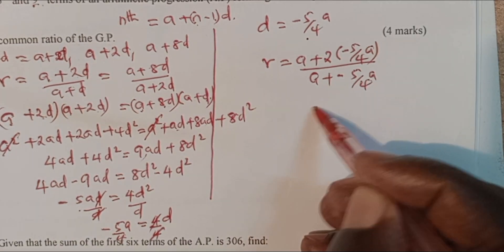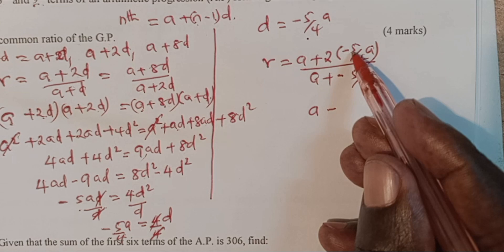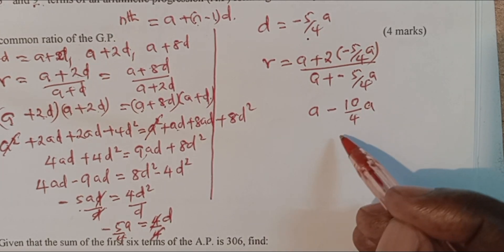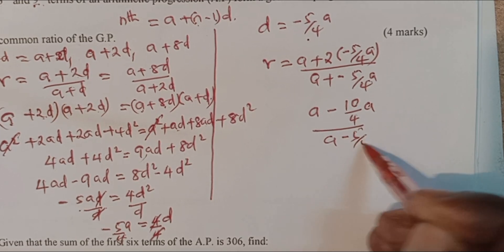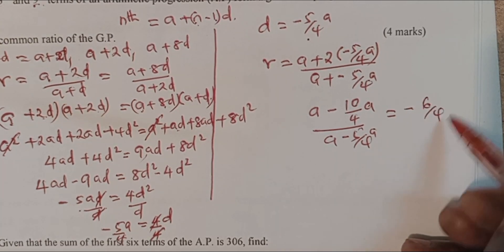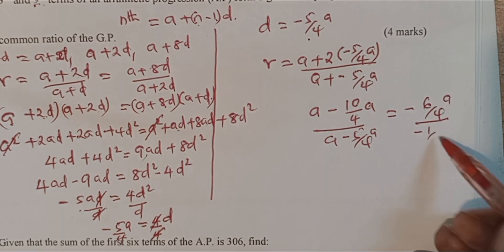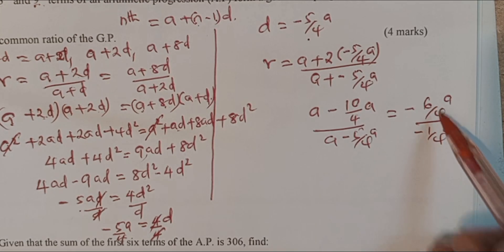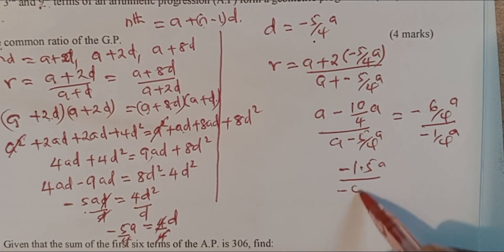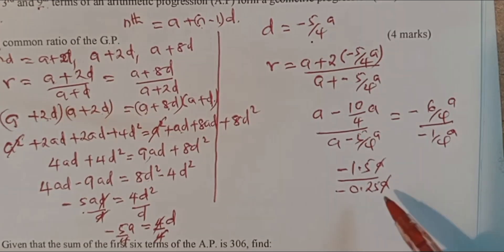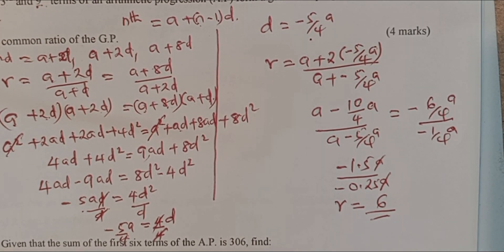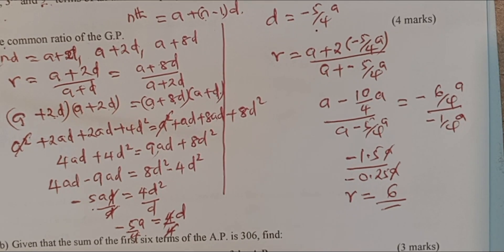The common ratio equals (A plus 2D) divided by (A plus D). Substituting D equals negative 5 over 4A: the numerator becomes A plus 2 times (negative 5 over 4A) which is A minus 10 over 4A, giving negative 6 over 4A. The denominator becomes A plus (negative 5 over 4A), giving negative 1 over 4A. Dividing: negative 6 over 4A divided by negative 1 over 4A gives a common ratio of 6.